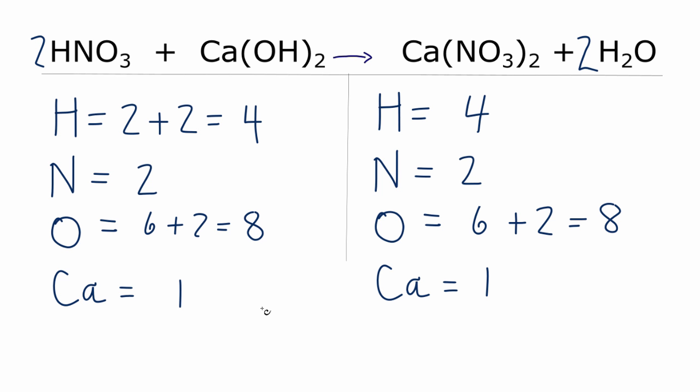So at this point, this equation is balanced. We have four hydrogens on each side, nitrogens two, oxygens eight on both sides, calciums are good. We're done. So that's the balanced equation for HNO3 plus Ca(OH)2 yields Ca(NO3)2 plus H2O.